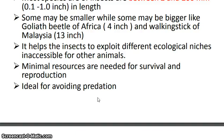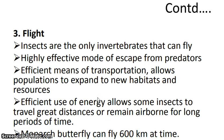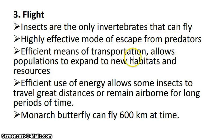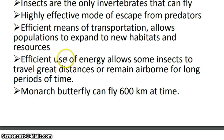Insects are ideal for avoiding predation because they are the only invertebrates with the ability to fly. Through this ability they can escape from predators using their two pairs of wings. Flight is an efficient means of transportation allowing them to access a wide variety of habitats. Efficient use of energy allows some insects to travel great distances — for example, the monarch butterfly can fly 600 kilometers at a time.